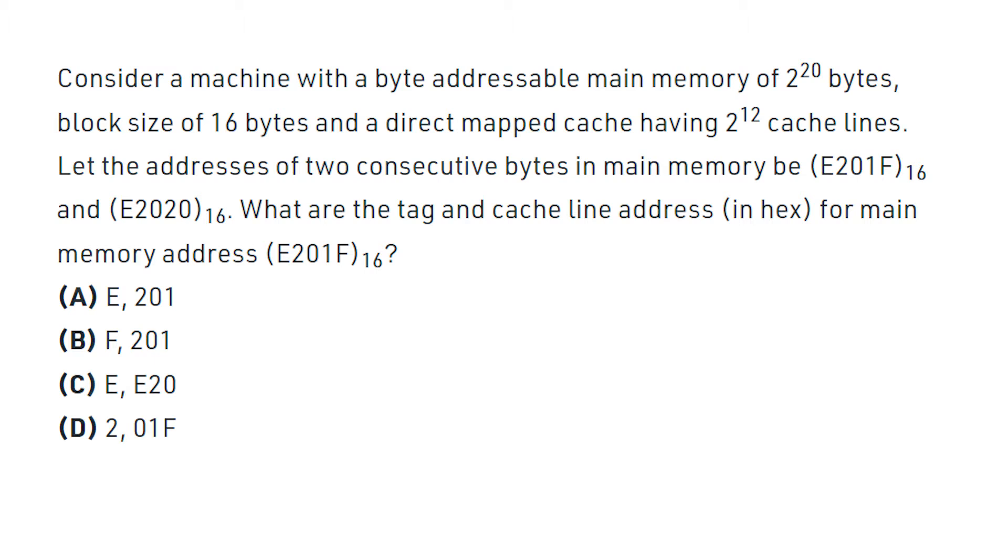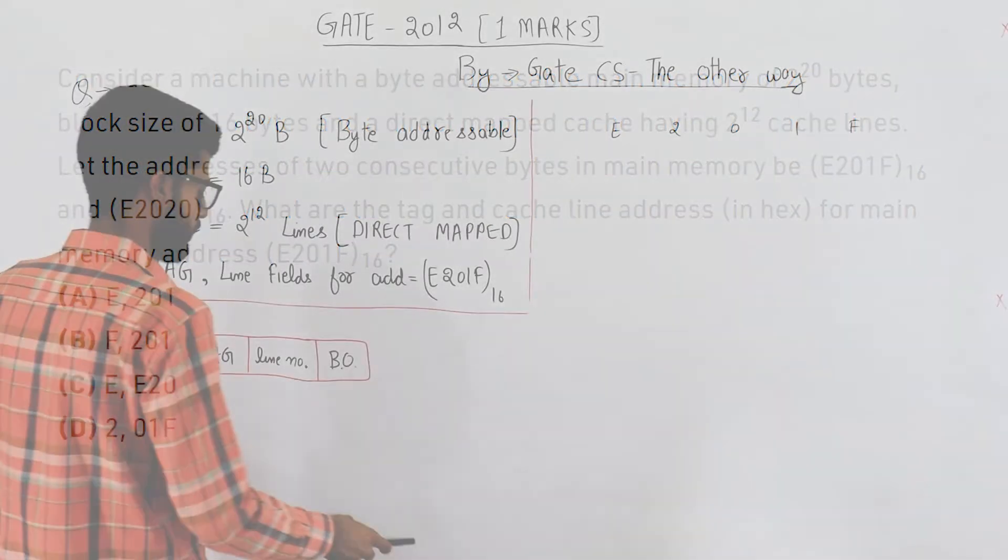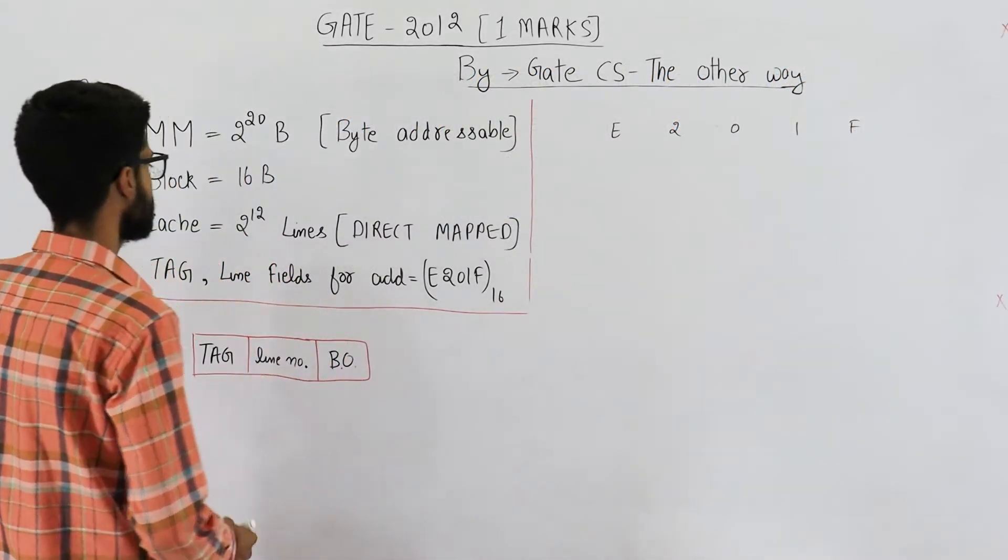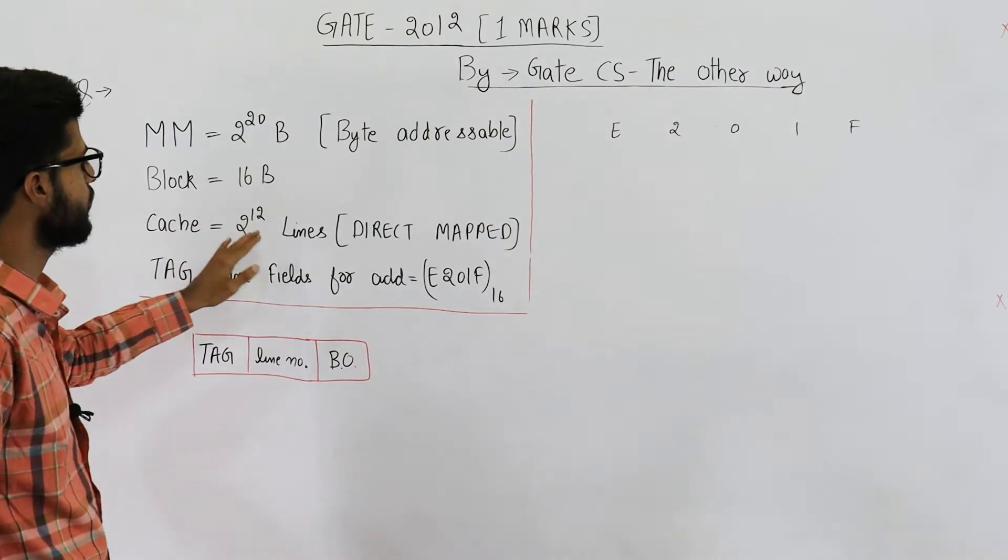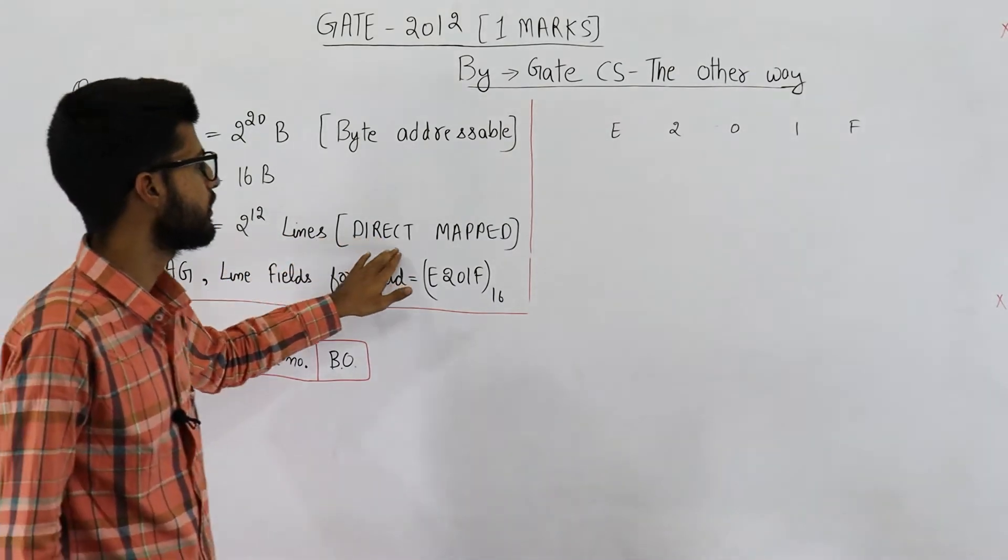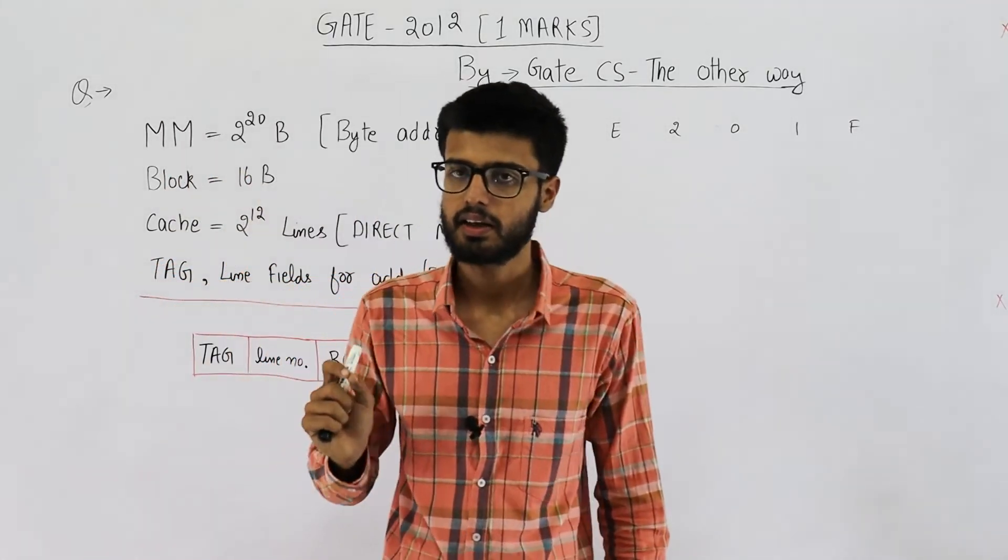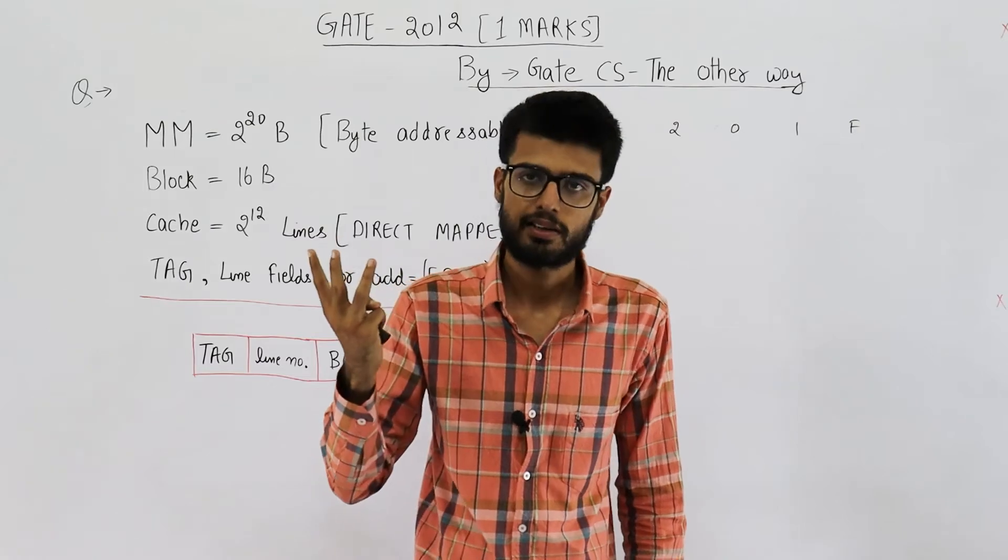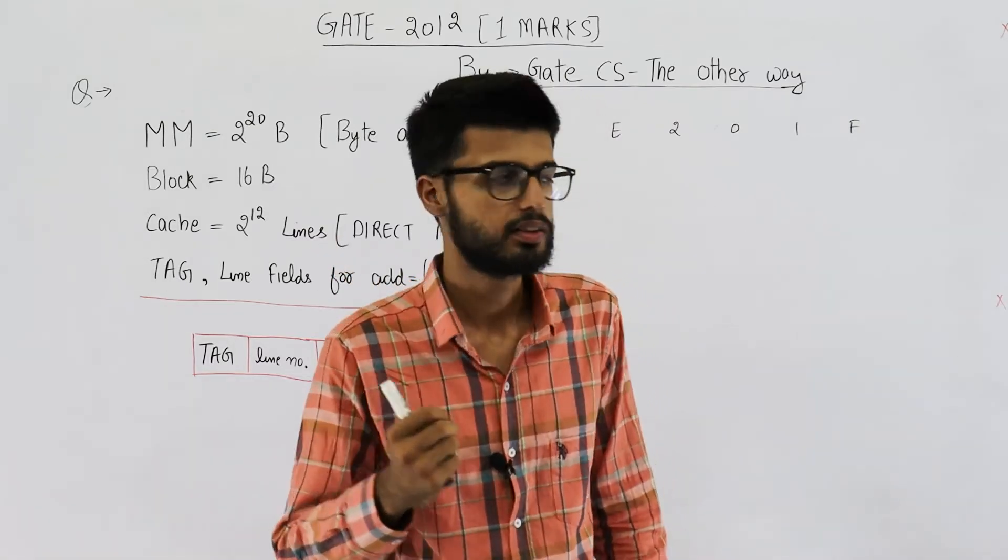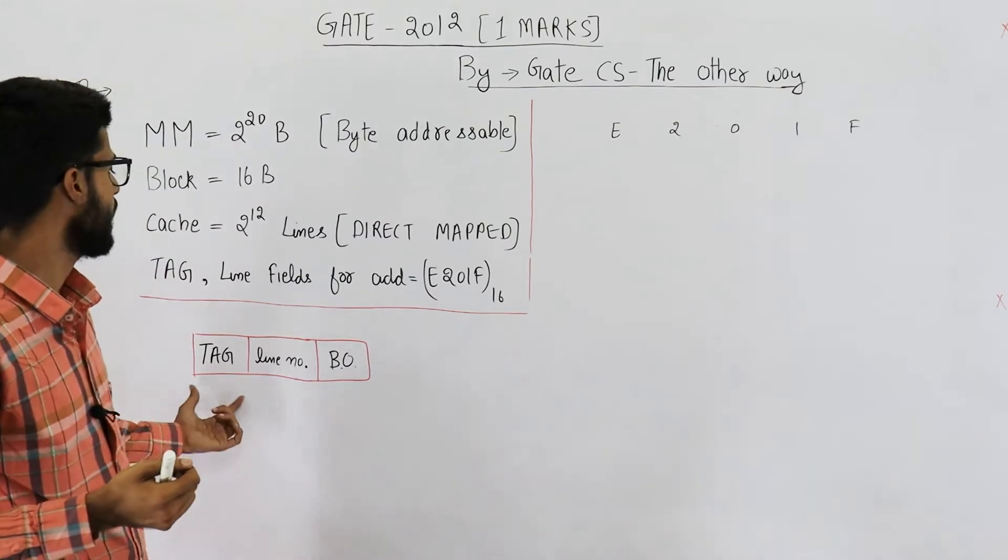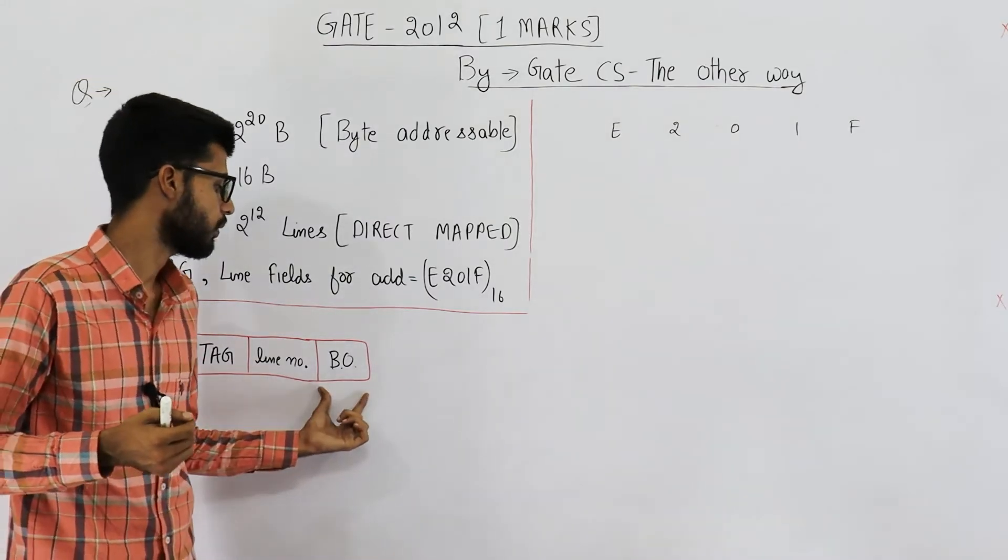What are the tag and cache line addresses in hexadecimal for the main memory address E201F base 16? So they have given you cache is 2^12 lines and it's a direct mapped cache. You very well know in case of direct cache mapping our address is divided into three fields: tag, line number and block offset.